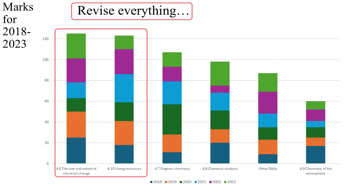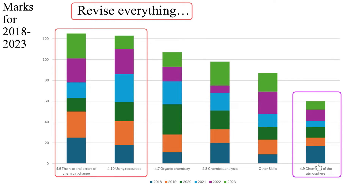You can see that the rate and extent of chemical change has been on average worth the most marks in total across the six years, with 2018 at the bottom and the most recent 2023 paper at the top. Using resources comes not too far behind, again pretty consistent. At the other end of the scale, the chemistry of the atmosphere was worth a lot in 2018 but since then hasn't been worth anywhere near as many marks as the other topics.